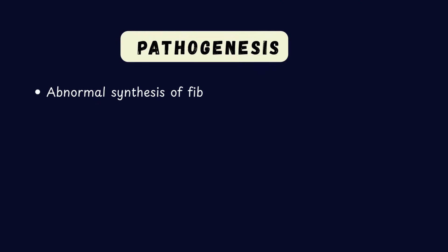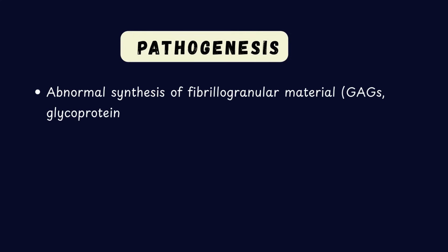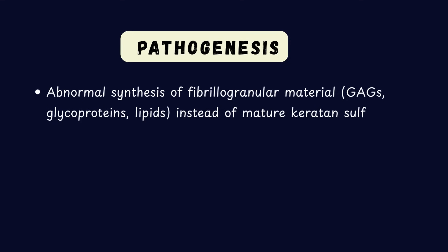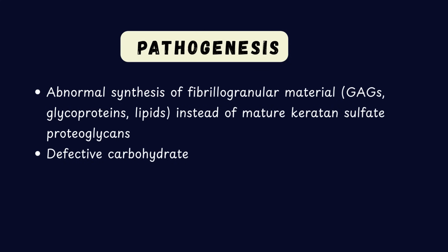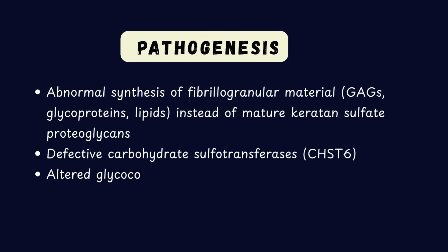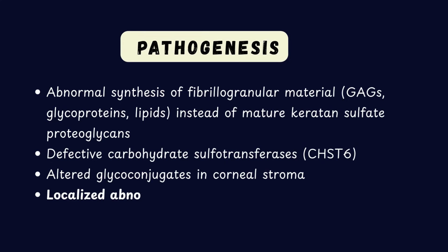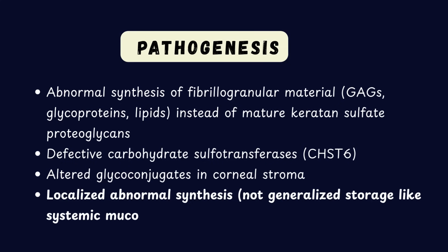The underlying defect in macular dystrophy is abnormal synthesis of fibrillogranular material consisting of glycosaminoglycans, glycoproteins, and lipids instead of normal keratan sulfate proteoglycan. This is linked to the CHST6 gene mutation affecting sulfotransferase activity. Unlike systemic mucopolysaccharidosis, which involves defective breakdown and systemic accumulation of mucopolysaccharides, macular dystrophy represents a localized synthesis abnormality.